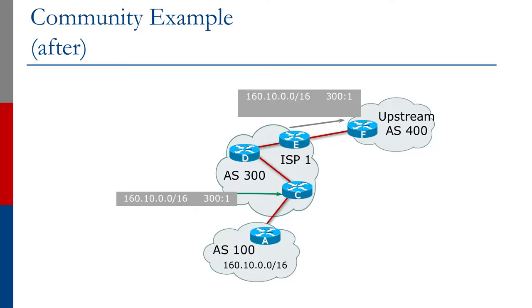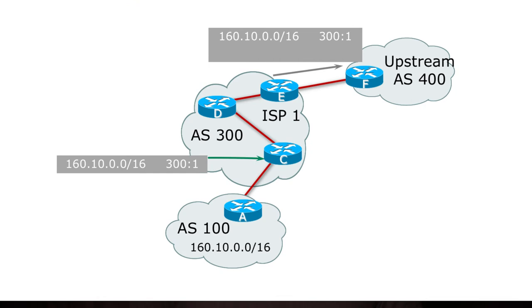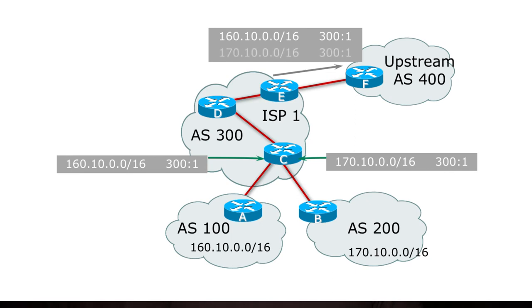When BGP communities came along, everything changed. Now, with communities in place, a prefix comes in from AS 100 onto Router C. We still have our inbound prefix filter, but we also tag the prefix with a community — I've chosen 300:1, where 300 is our AS number and 1 means transit customer. On Router E, all we do is set up a filter that says 'let any member of community 300:1 out.' We no longer look at individual prefixes — we just ask: is the prefix a member of community 300:1? If so, let it out. When a new customer comes along, we simply drop them into community 300:1 and they automatically get announced out to the internet without any recycling of the BGP session.